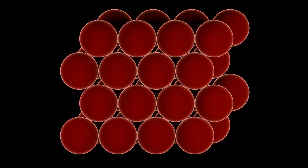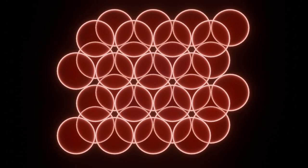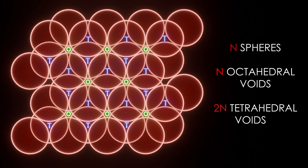If we take a hexagonal close-packed layer and place the second layer in depressions of the first one, some tetrahedral as well as octahedral voids are formed. For n spheres, n octahedral and 2n tetrahedral voids are formed.